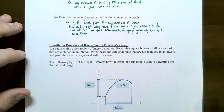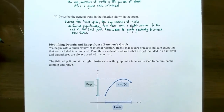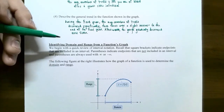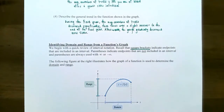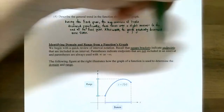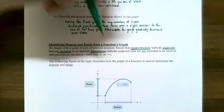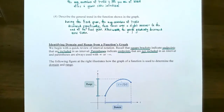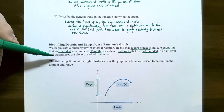We obtained a lot of information from the graph - input and output values, whether it's a function, and the general trend. Now let's focus on domain and range. We need to review interval notation quickly. With interval notation, use square brackets to include endpoints and parentheses when endpoints are not included. If you ever use infinity or negative infinity, always use parentheses - you never include infinity as a number.